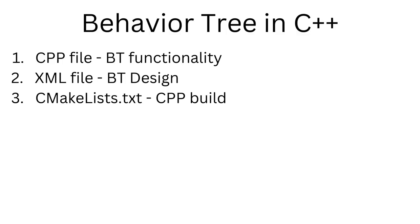To make this behavior tree project, we'll create a new directory with three components: a CPP file for the actual functionality of all leaf nodes, a behavior tree XML file which defines the design of the behavior tree including every node type, and a CMakeLists file for building the project. Let's begin by creating a directory for this project, named grasp-ball-robot-demo.